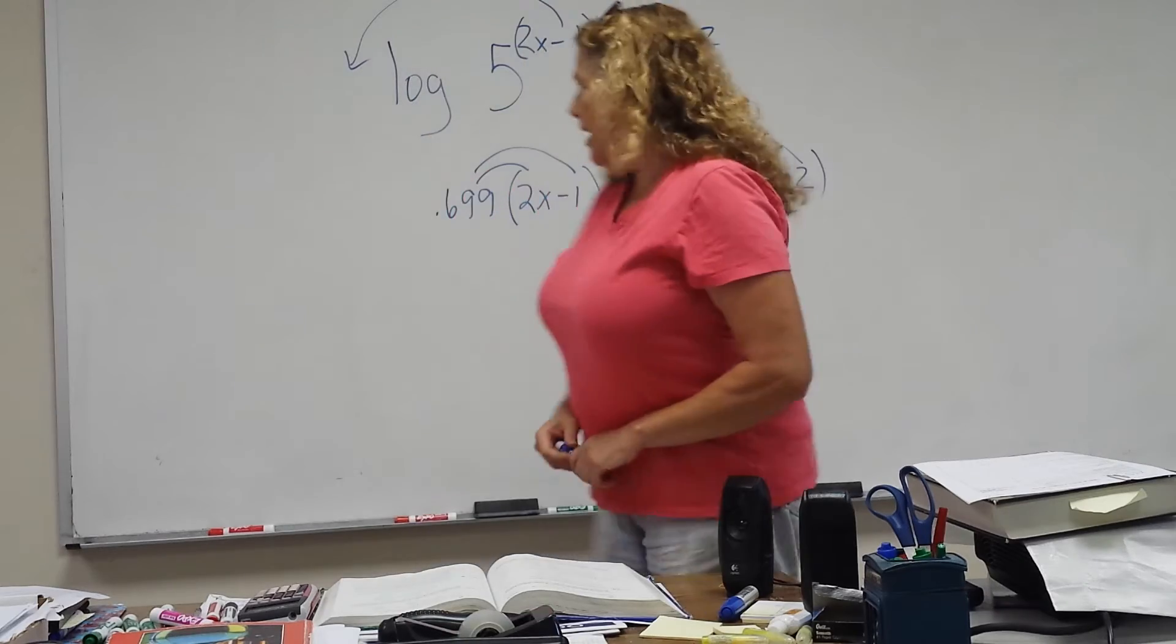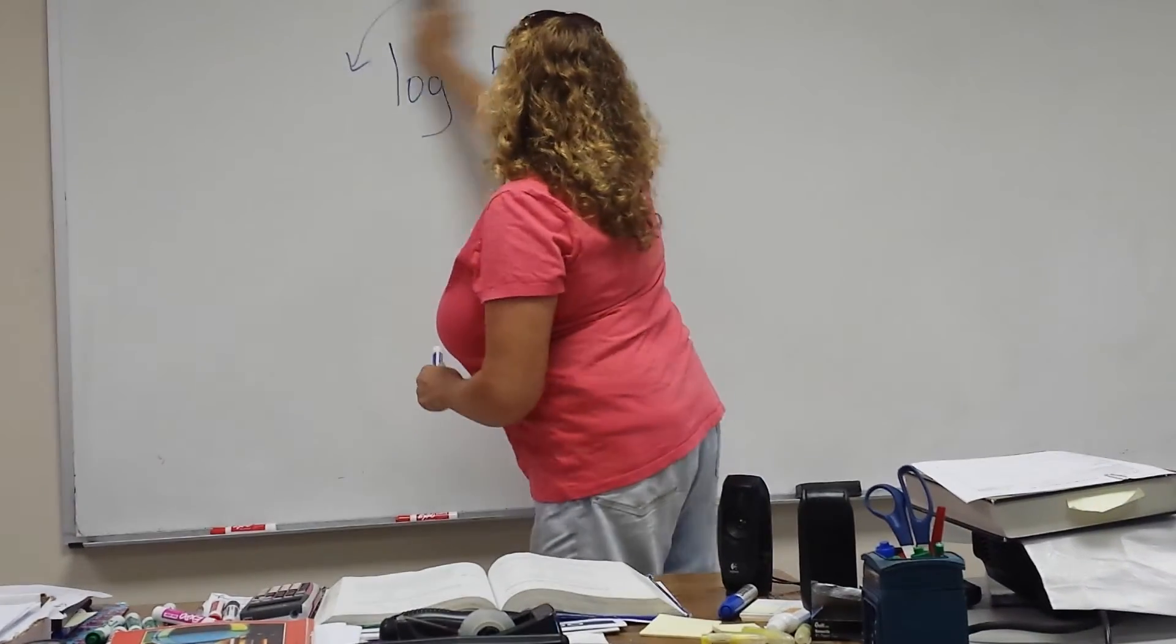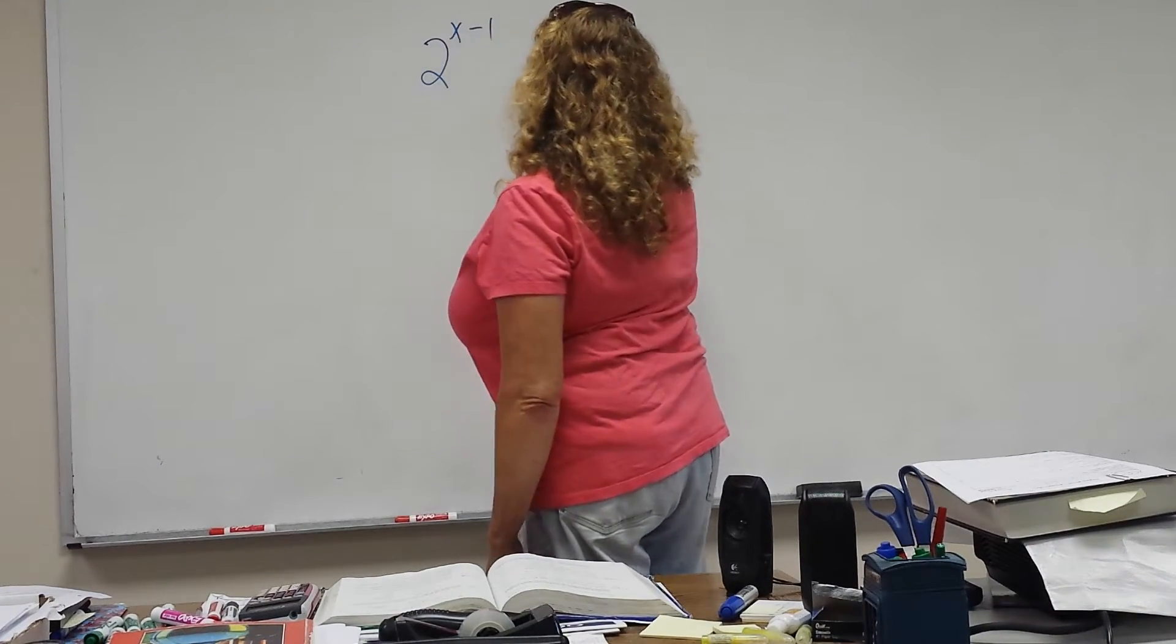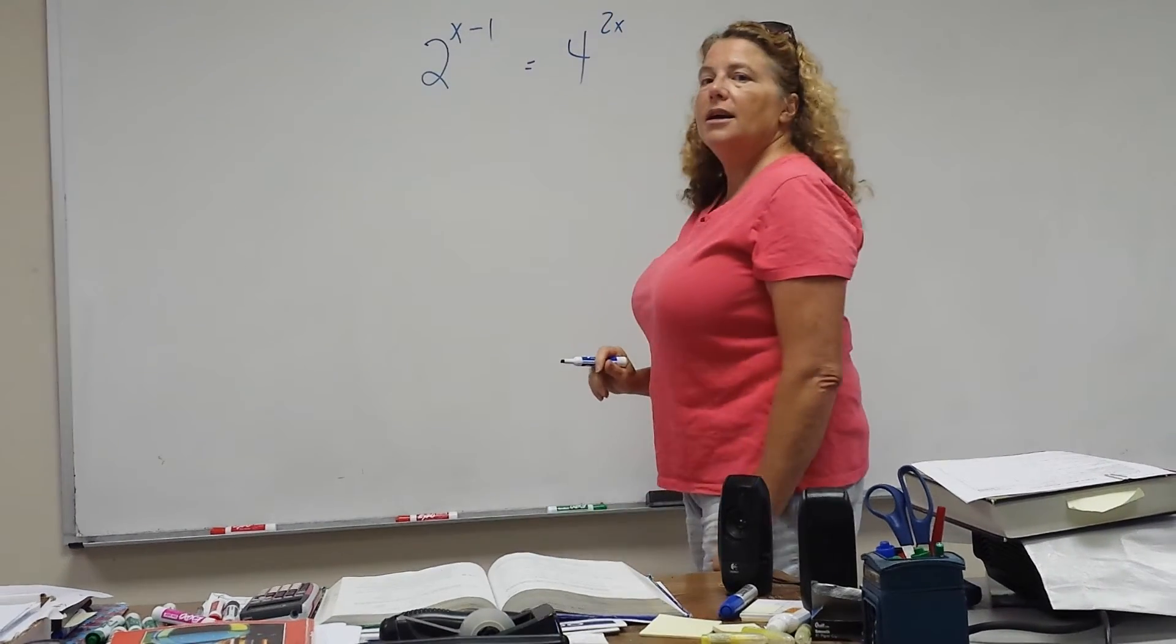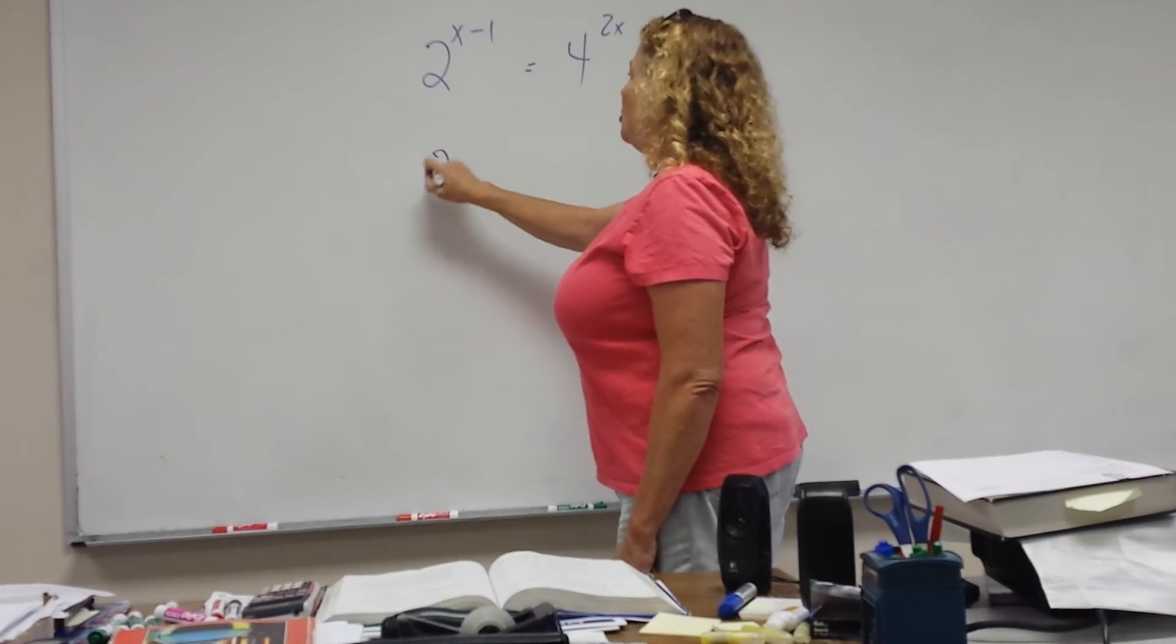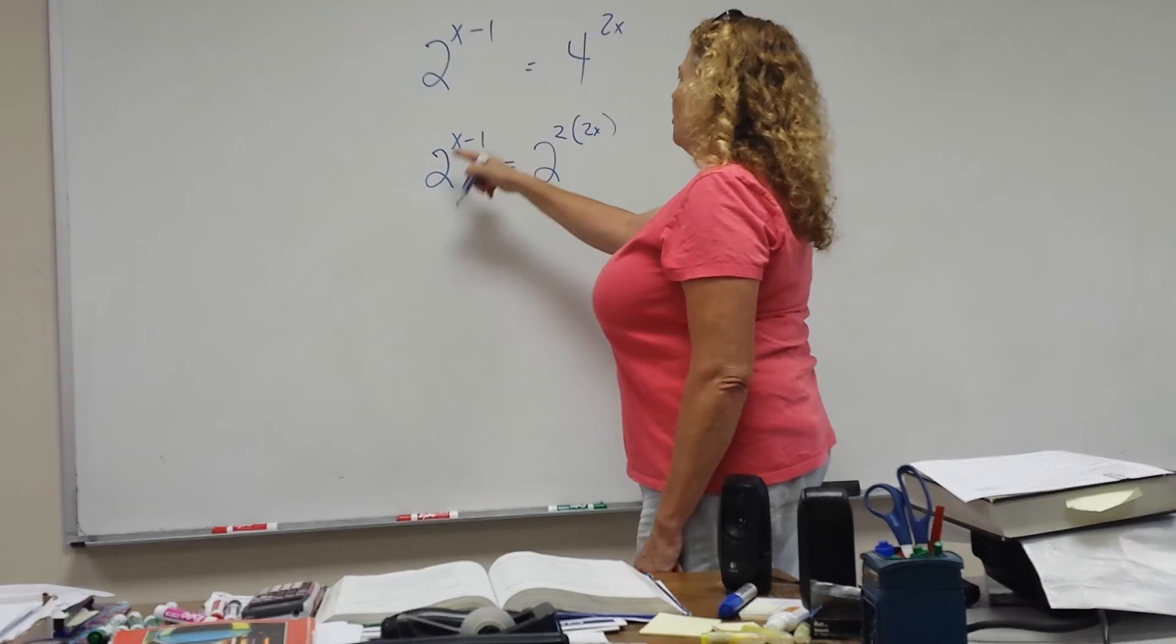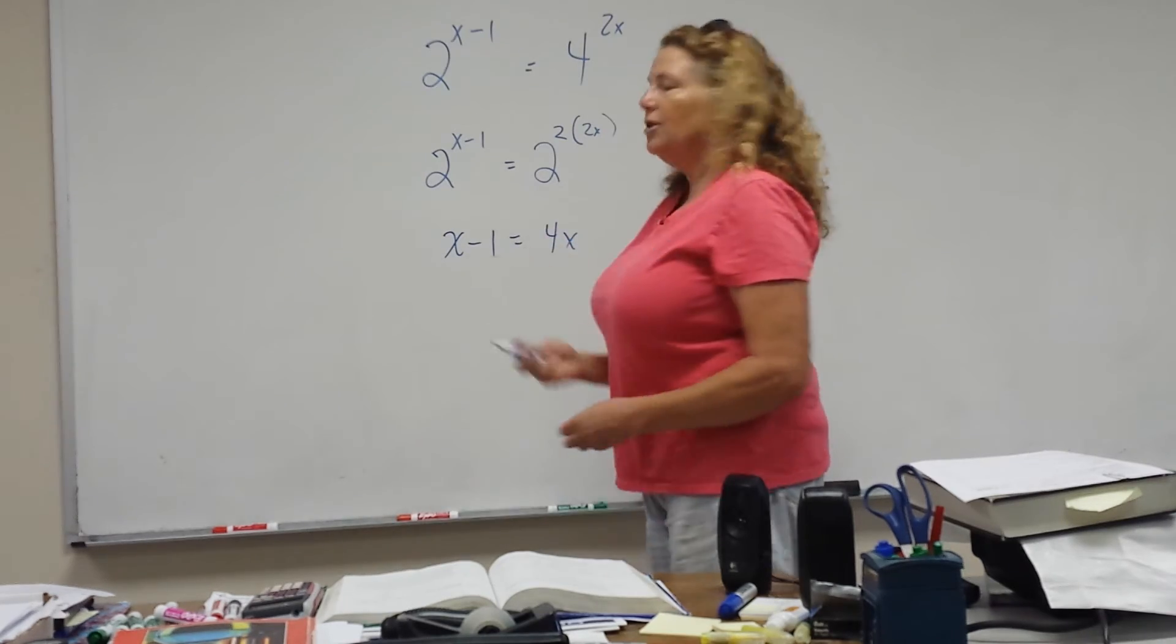Now, if you were to get an equation that looked like this, okay? If one side is 2 to the x minus 1 and the other one is 4 to the 2x, you don't have to use your calculator at all. Because, remember, 2 to the x minus 1, this would be 2 squared to the 2x. So then you just have x minus 1 equals 4x and you can solve it.